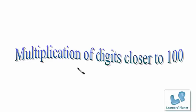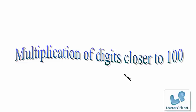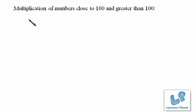Hello friends, welcome to Learners Planet. In this session we are going to learn how to multiply digits which are closer to 100 and greater than 100. This is a shortcut which will help you during your exams and it hardly takes any time. So let us see how we are going to multiply these numbers which are close to 100 and greater than 100.